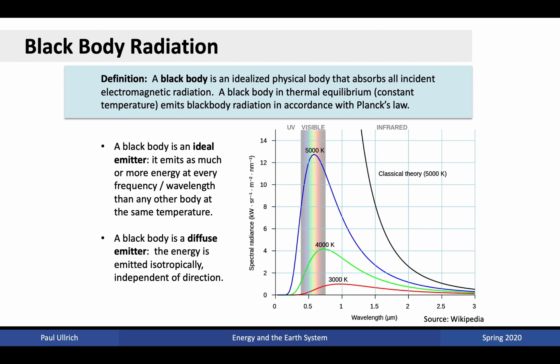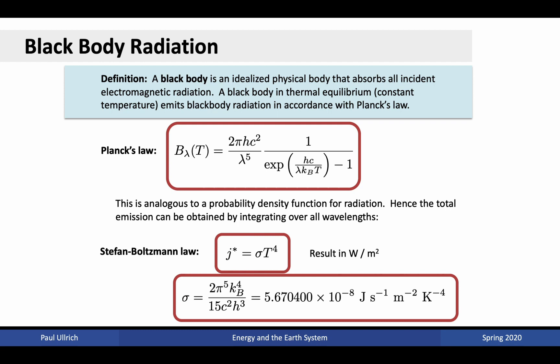Planck's law is given here — I don't recommend memorizing it unless that's your discipline. But if we integrate Planck's law over all possible wavelengths — considering the total contribution from all photons at all wavelengths — we find that the total energy emitted in watts per meter squared from a blackbody is proportional to the fourth power of temperature. That constant of proportionality is the Stefan-Boltzmann constant, approximately 5.67 × 10⁻⁸ joules per second per meter squared per Kelvin to the fourth.